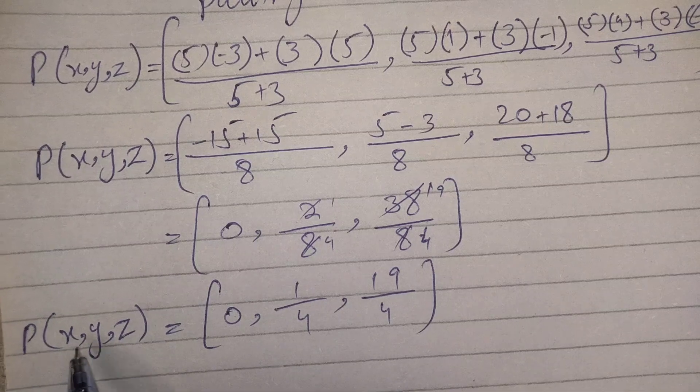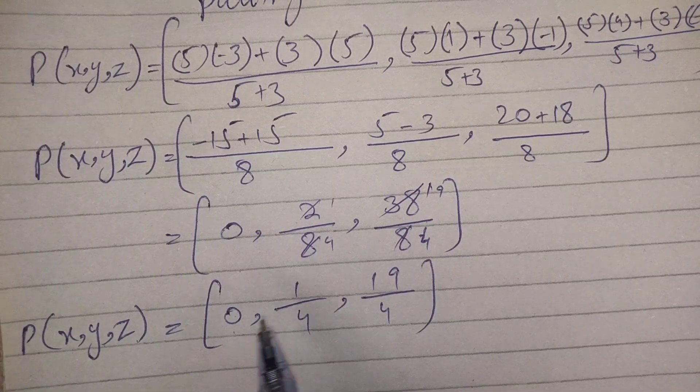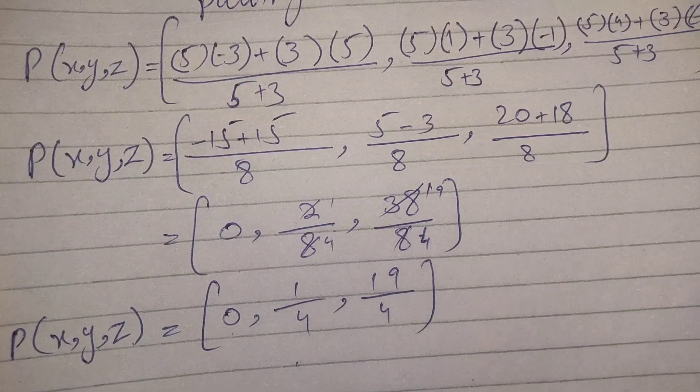Therefore, P(x, y, z) is equal to (0, 1/4, 19/4).